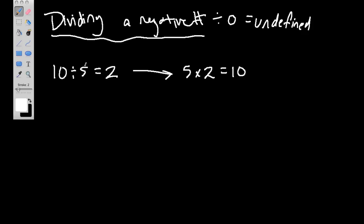In other words, 10 divided by 5 is 2, and we know that's correct because you can multiply these two numbers to get your first number, 10.